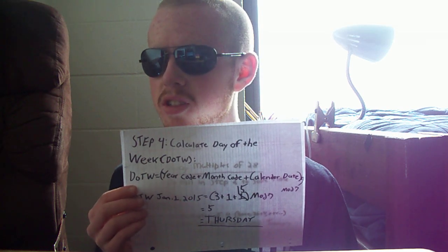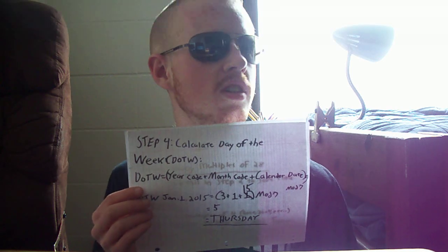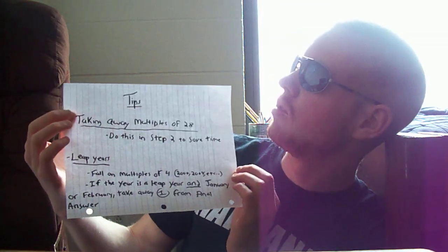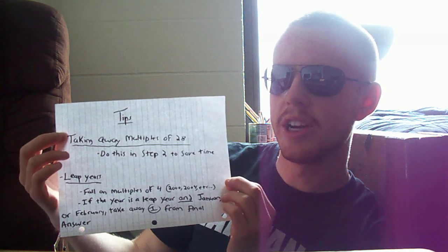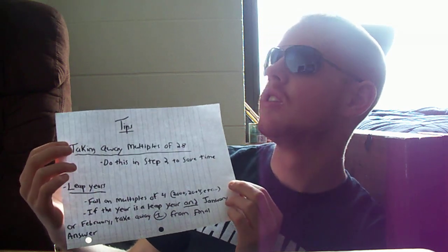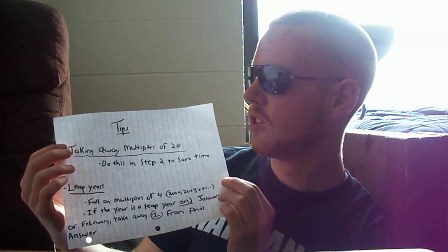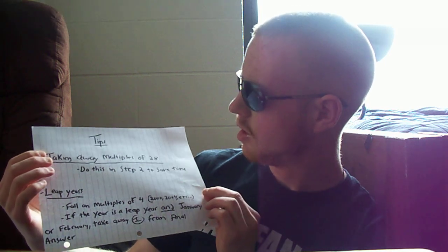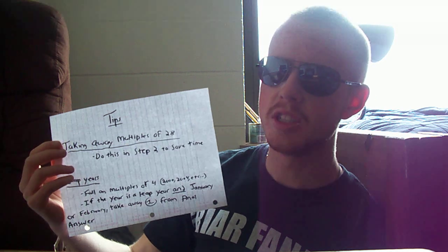If you can pull it off, then please put the video on YouTube — videotape the thing. Here's a couple of tips that might help you. In step 2, when you're calculating the year code, you're dealing with a lot of big numbers. So you would take away multiples of 28 to save time — there's only a few of them: 28, 56, and 84. Say you're doing 2060 — you take away 56, you have 4, and boom, you save some time.